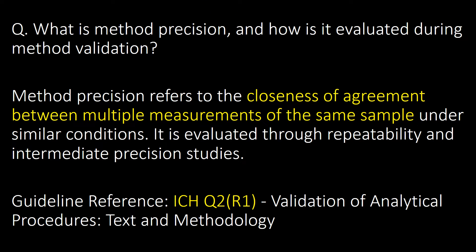What is method precision and how is it evaluated during method validation? Method precision refers to the closeness of agreement between multiple measurements of the same sample under similar conditions. It is evaluated through repeatability and intermediate precision studies. Guideline reference: ICH Q2.